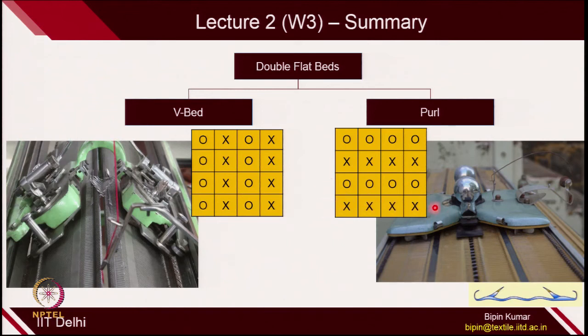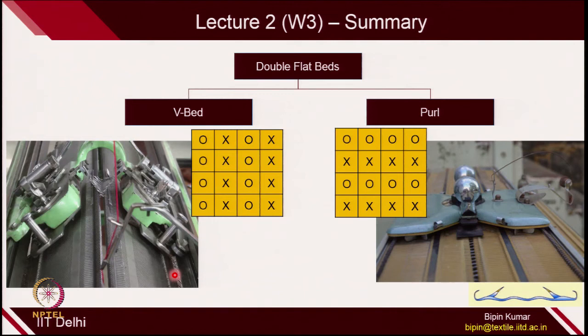The purl knitting machine, due to its nature, was making entire courses of technical back and technical front alternatively. In the flat category with 2 beds, these are the 2 popular machines. In the market, you will see mostly V bed machines because they give a lot of flexibility. The V bed machine is highly flexible in terms of fabric design — we can use it as a single bed, for making technical back and front loops simultaneously, or for making entire technical back or front loops depending on which bed we select.